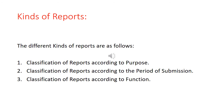Now we will move on to kinds of reports. The first classification is according to the purpose, the second is according to the period of submission, and the third is according to function. From this, it is clear that reports can be broadly classified into three categories: on the basis of purpose, period of submission, and function.